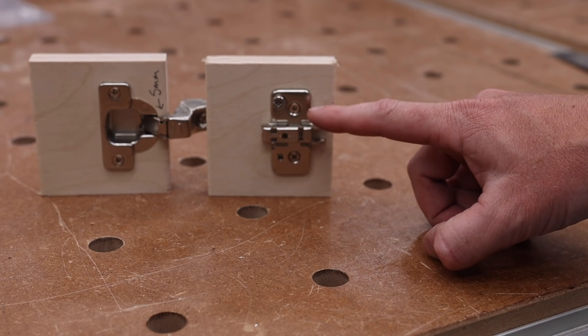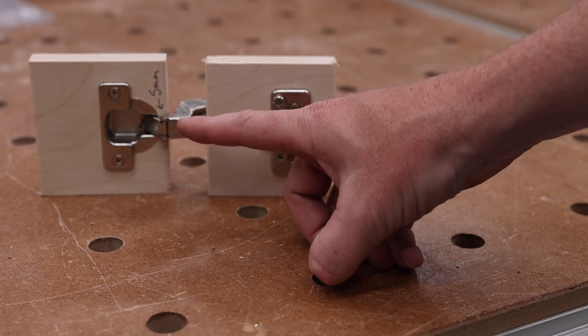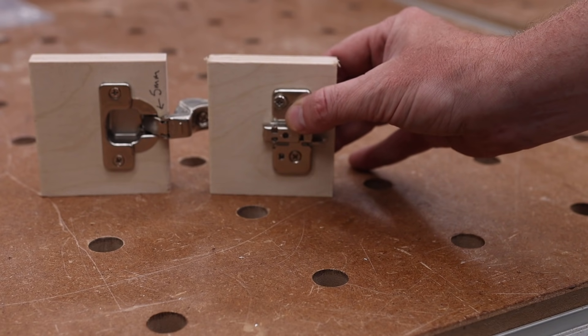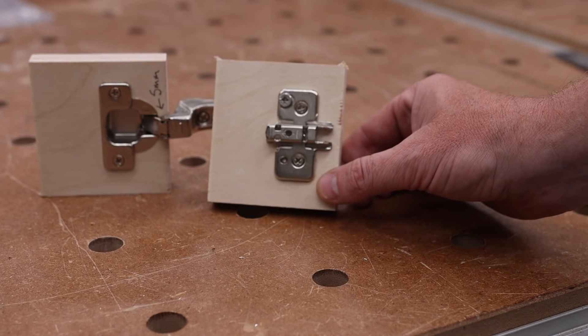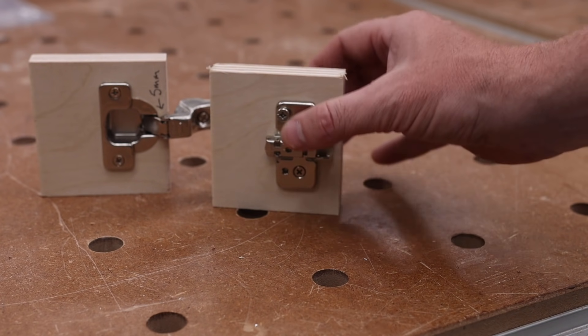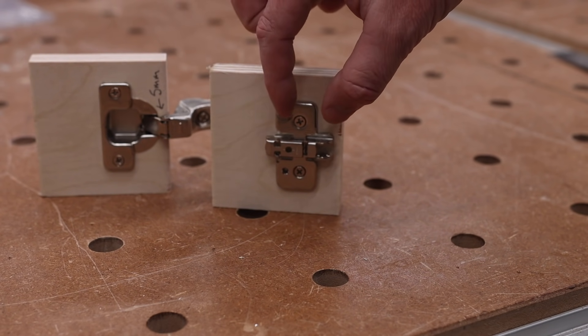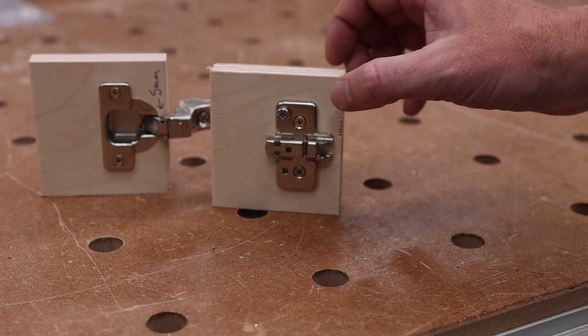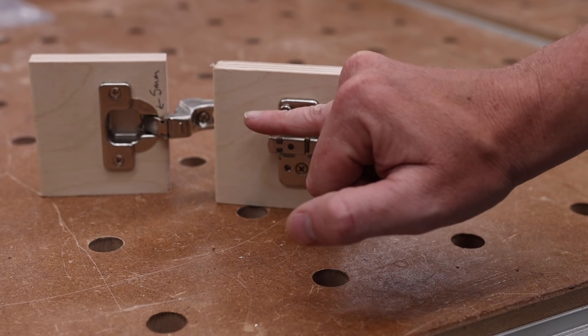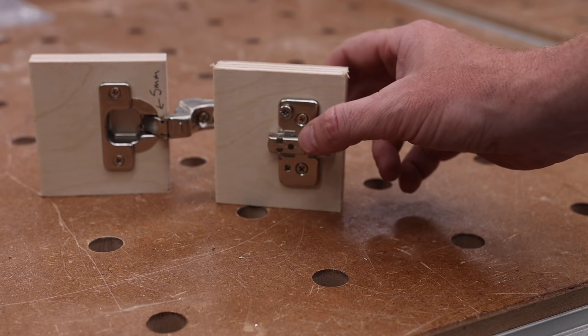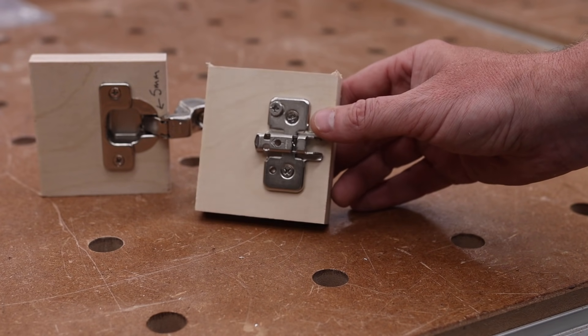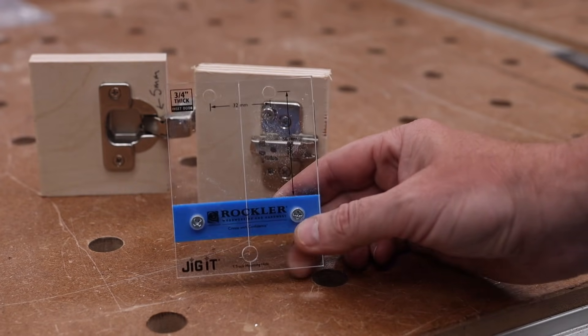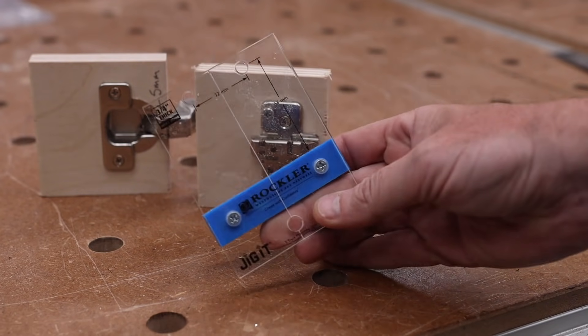So the biggest thing when it comes to inset doors using this style of hinge is how far back the hinge plate is installed. So what you have to consider is the thickness of the door. So if this was overlay, this hinge plate would actually be further up. But since this is inset, this has to be back further. Now, how do you figure that out? Well, the manufacturer has instructions on exactly how far that needs to be back.